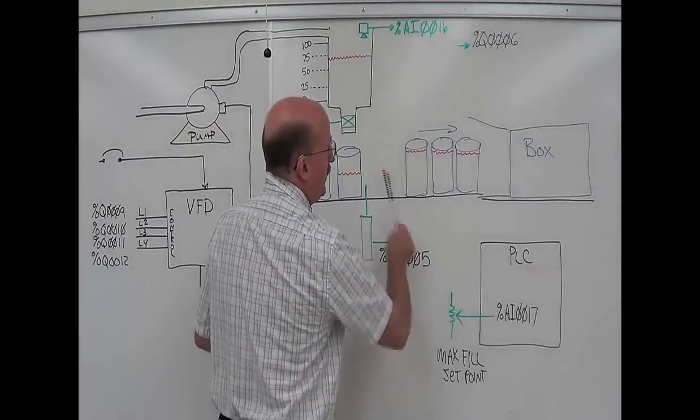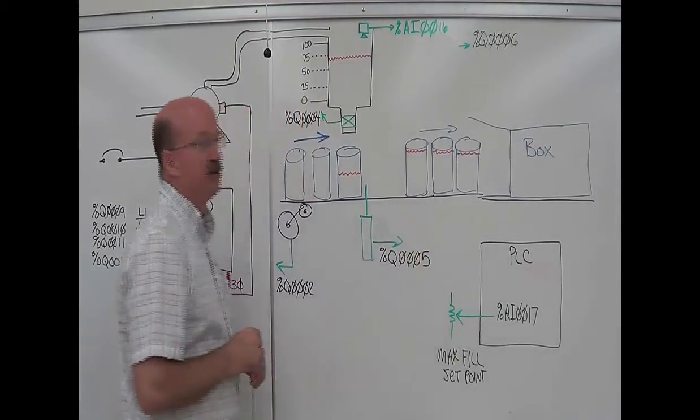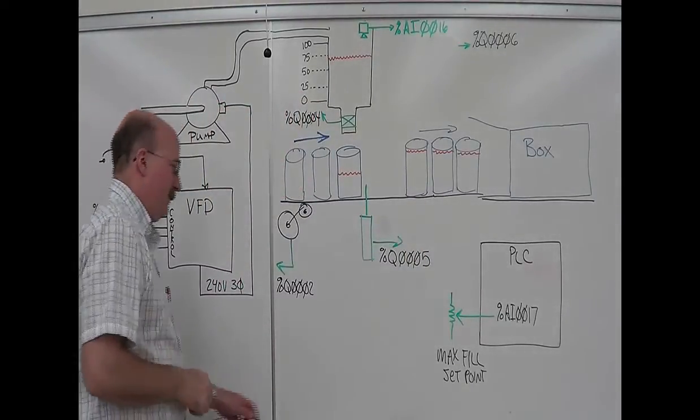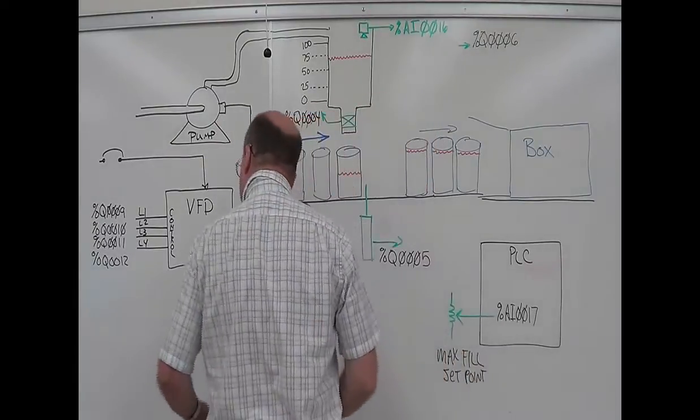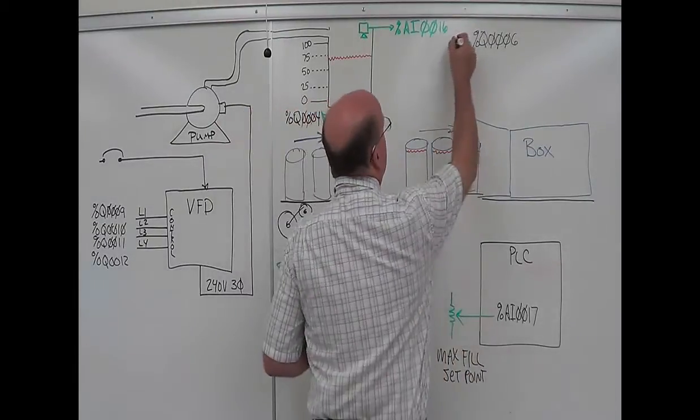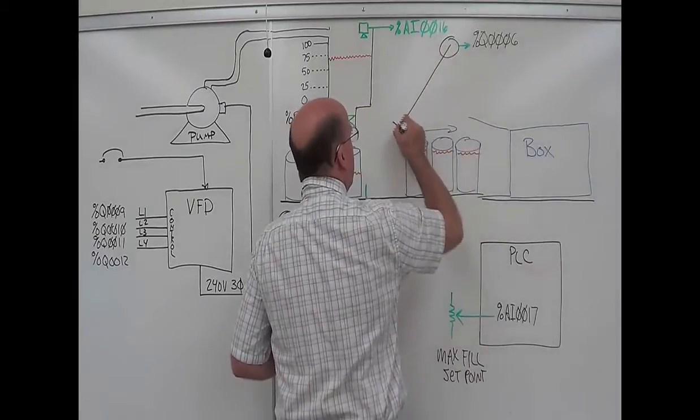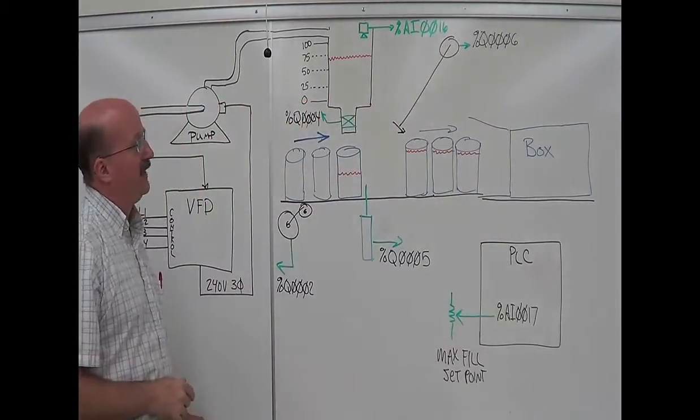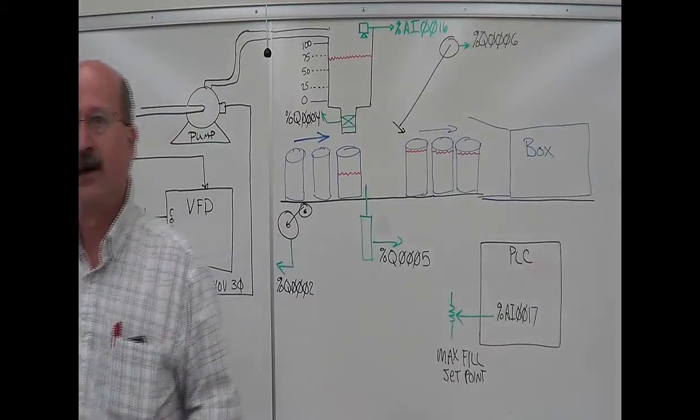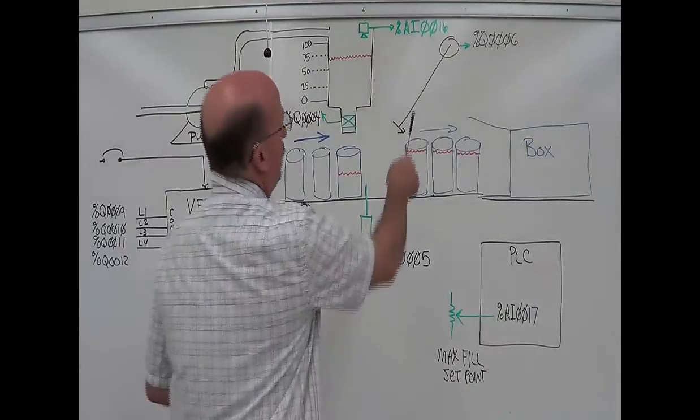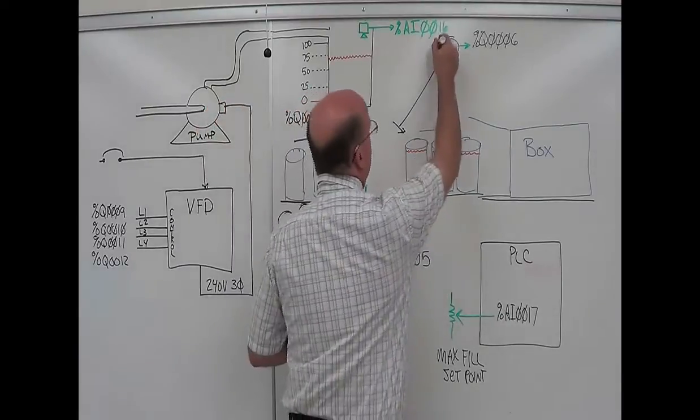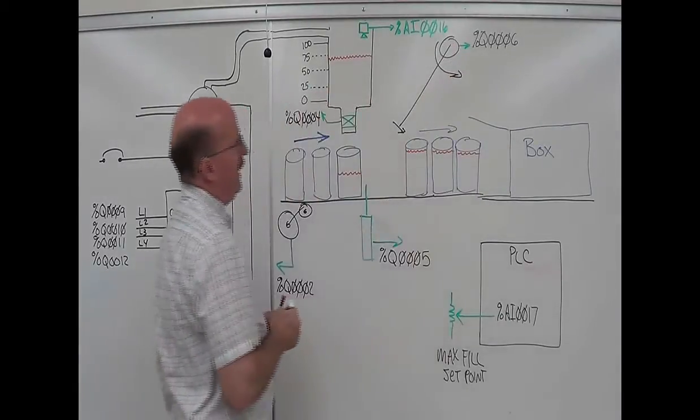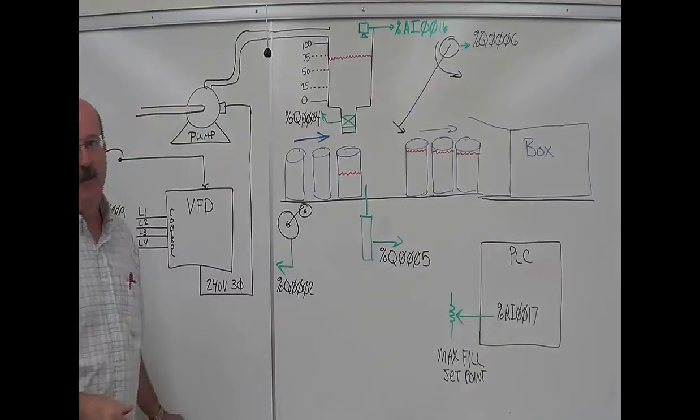What happens is when you get twelve cans set up in this loading area up here, you actuate. I left that off of there, but you've got an actuator up here that will swing in and push all twelve of those cans into the box. This operates once every twelve cans, rotates, pushes them in, and slides them in the box.